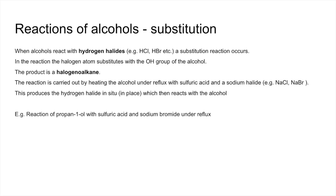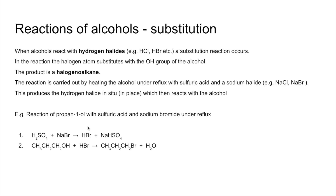For example, the reaction of propan-1-ol with sulfuric acid and sodium bromide under reflux: first, the hydrogen halide is produced, and notice we also get sodium hydrogen sulfate. Then in the second reaction, the hydrogen bromide reacts with the alcohol — we substitute the OH for the Br — making 1-bromopropane.